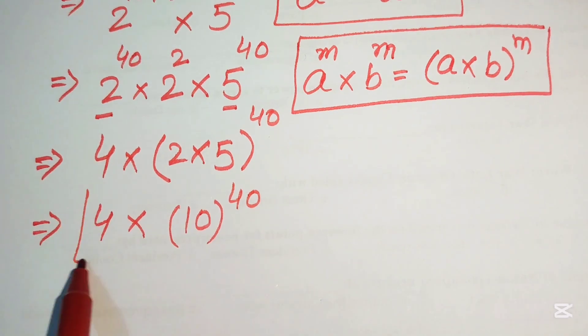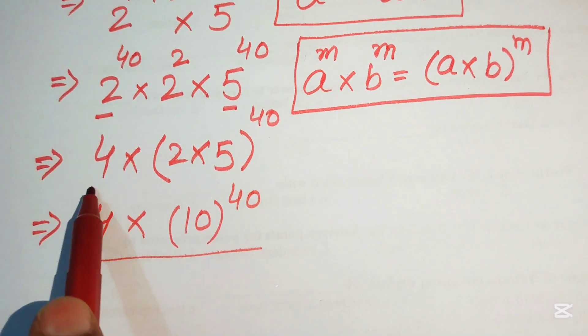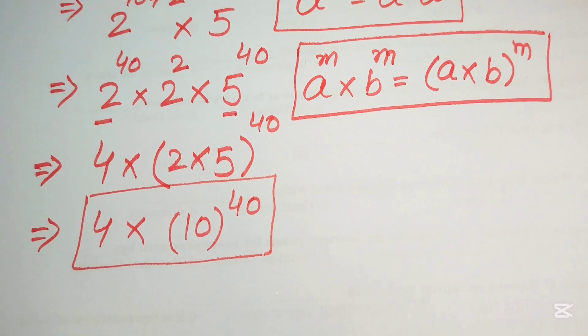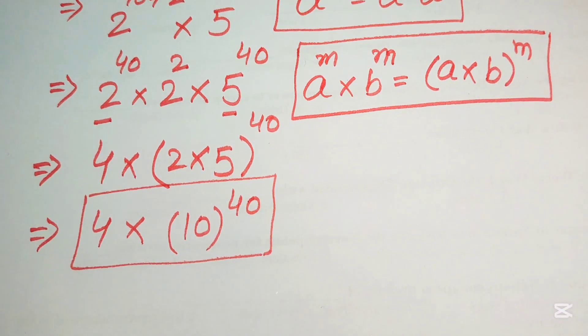So 4 times 10 to the power of 40 is the final simplified form of the given expression. Thank you so much for watching this video. Please subscribe to my channel for more exciting videos.